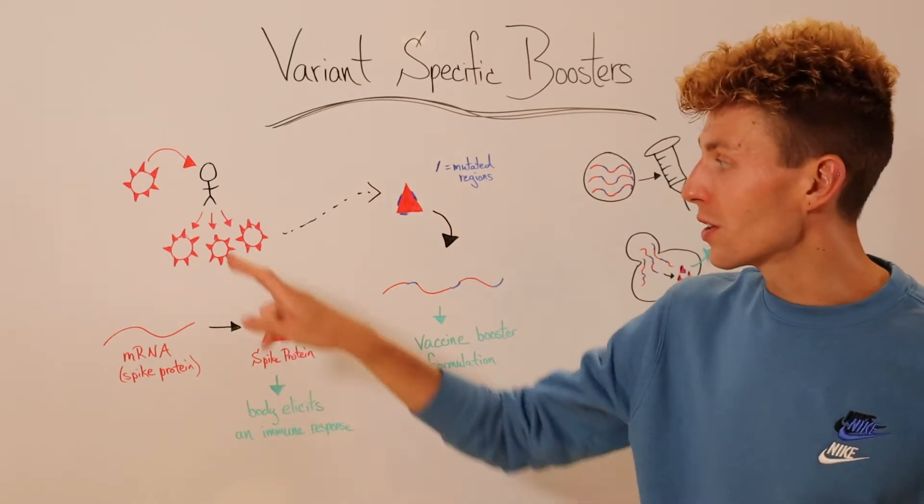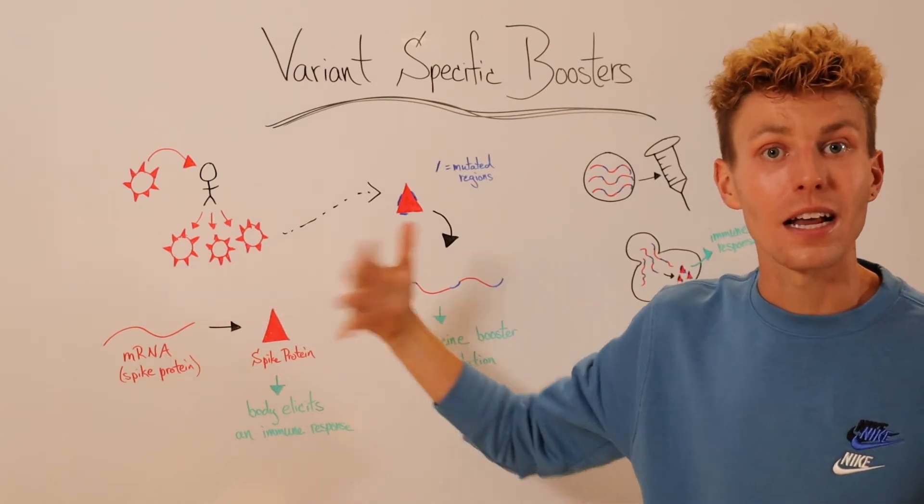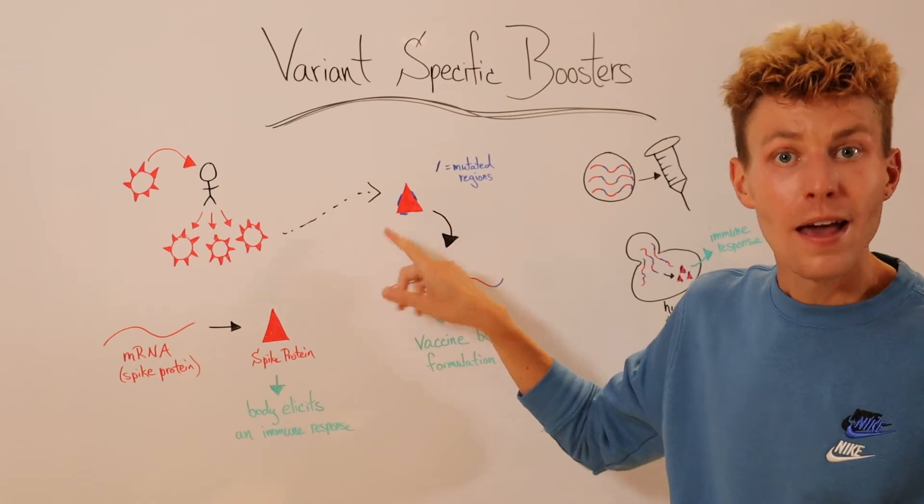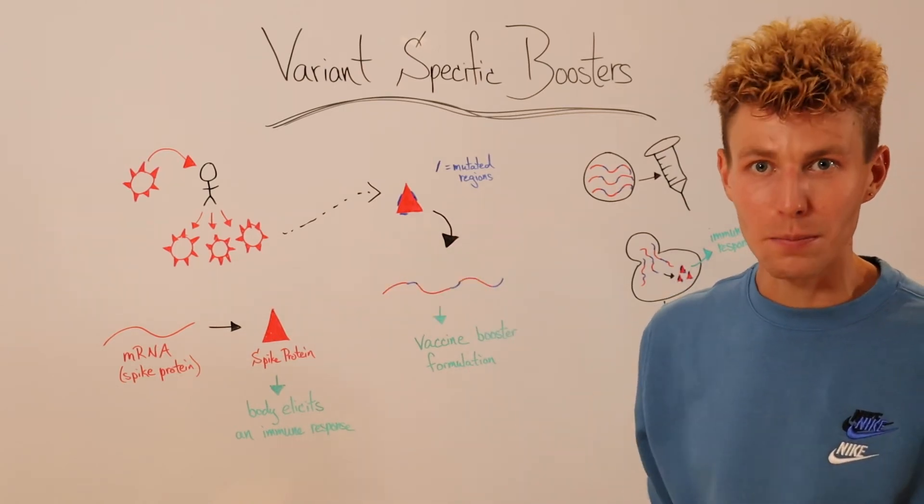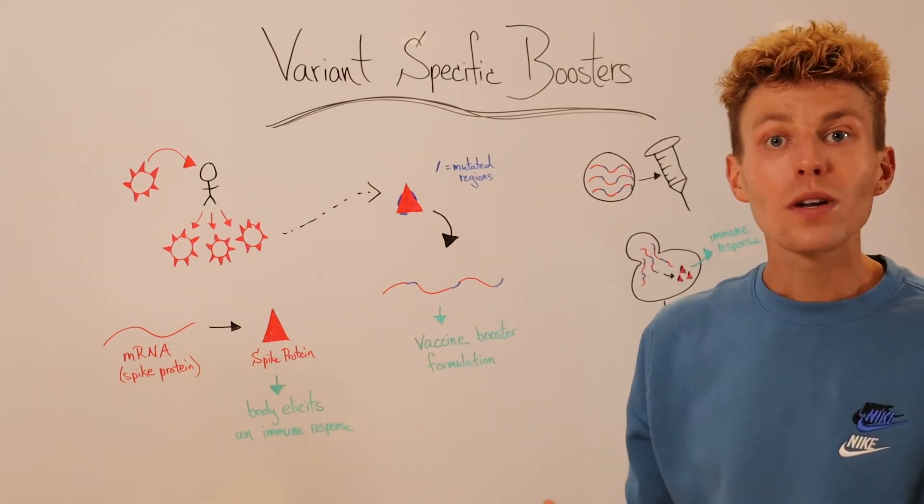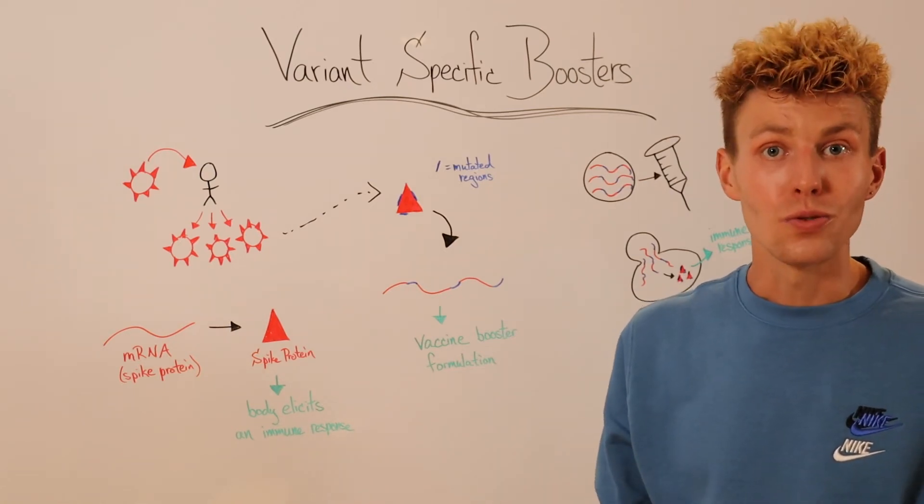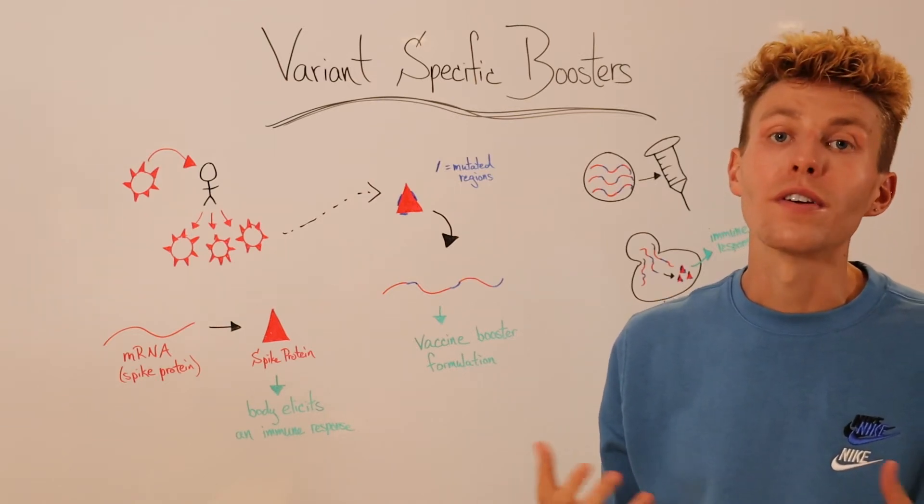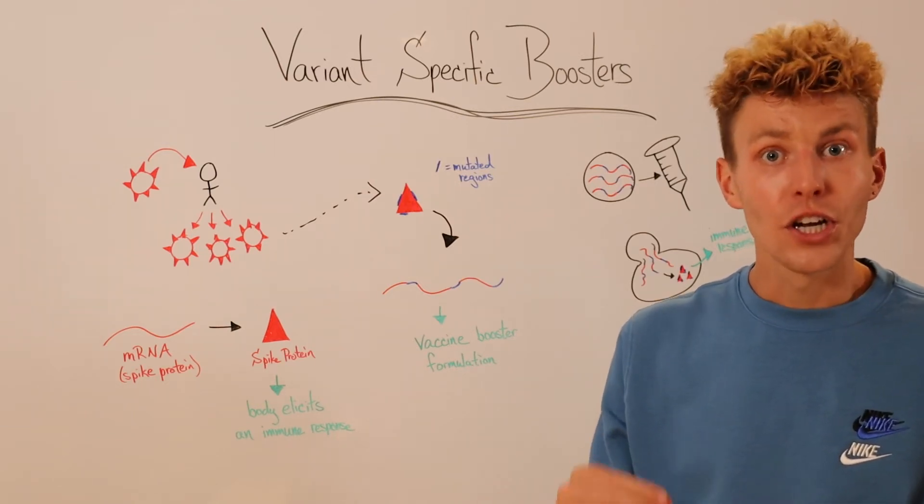However, unfortunately, as that virus replicates inside of our bodies, that's also what allows it to have mutations. Some of those mutations occur on that spike protein. This can be changes to different amino acids. This is what allows for different variants to be named, such as the beta variant or the delta variant or the very common omicron variant currently.